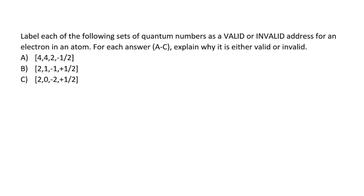Today we're going to look at this question: label each of the following sets of quantum numbers as a valid or invalid address for an electron in an atom. For each answer, a through c, explain why it is either valid or invalid. We need to do a little background on quantum numbers.